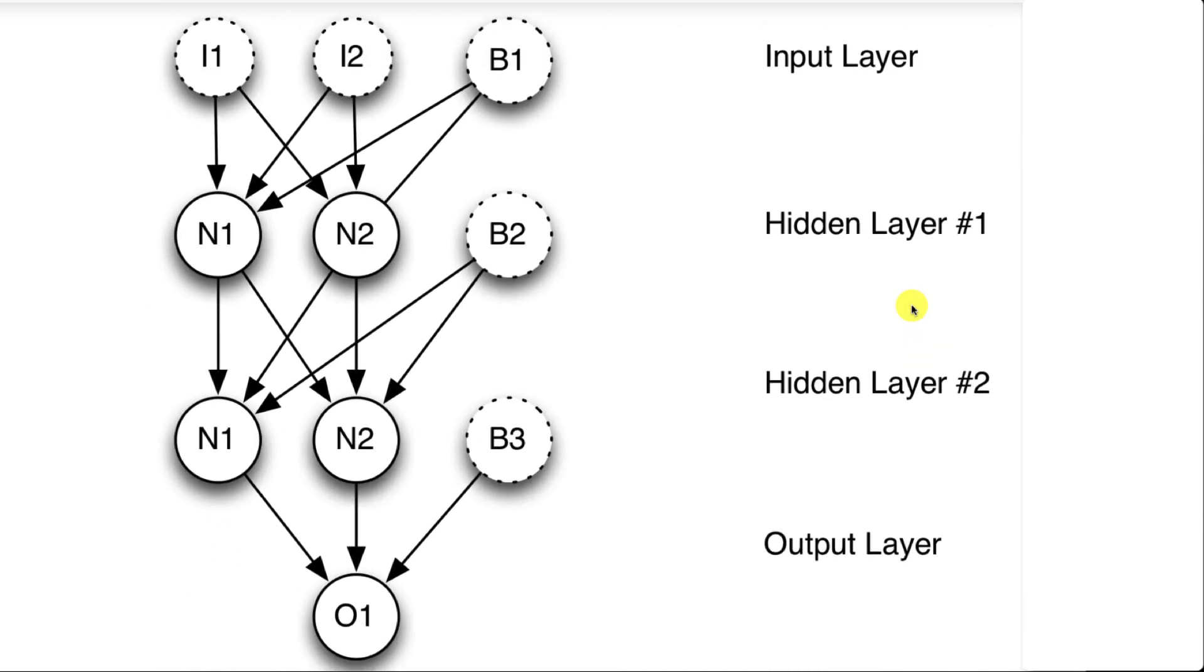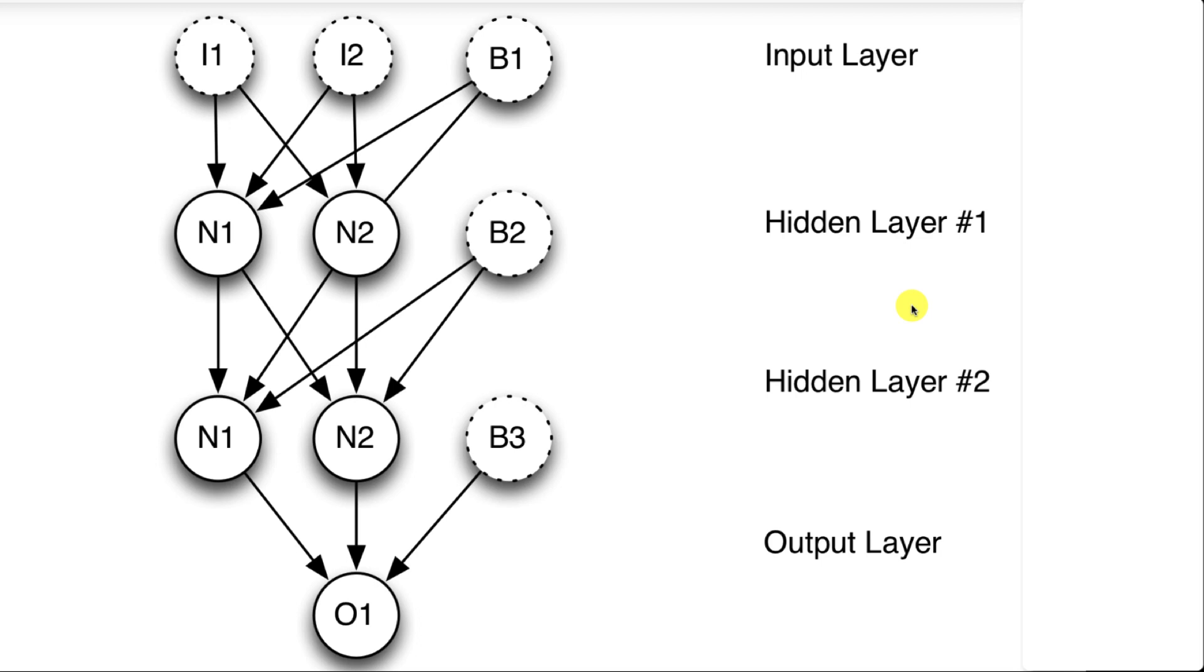This is the structure of a neural network. They have multiple layers. We'll see there are additional layer types and other things that will make this more complicated.